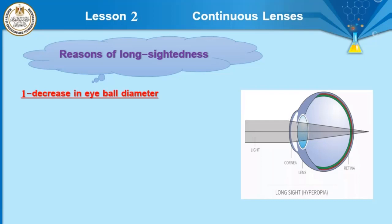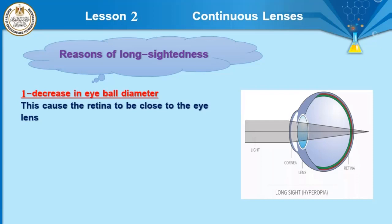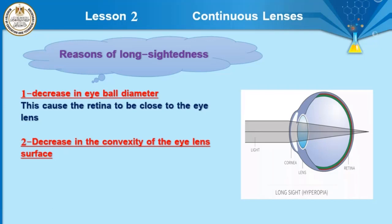What is the result of decreasing the eye ball diameter? This causes the retina to be close to the eye lens, and the image is formed behind the retina. Reason number two: decrease in the convexity of the eye lens surface. What is the result? The focal length increases — this causes a longer focal length for the eye lens.